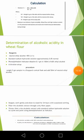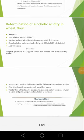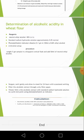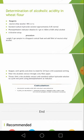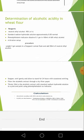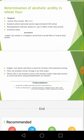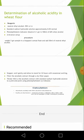Determination of alcoholic acidity in wheat flour: reagents used are neutral ethyl alcohol 90% weight per volume, a standard sodium hydroxide solution of approximately 0.05 normal, and phenolphthalein as indicator. Procedure: weigh 5 grams of sample into a stoppered conical flask and add 15 ml of neutral ethyl alcohol. Stopper, swirl gently, and allow to stand for 24 hours. Filter the alcohol extract through a dry filter paper, then titrate 10 ml of the alcohol extract with the standard sodium hydroxide solution to a pink endpoint using phenolphthalein as indicator. The acidity is expressed as H₂SO₄ on a dry basis.